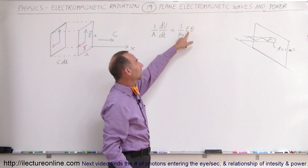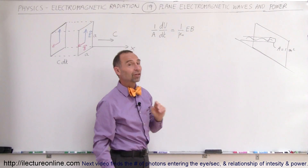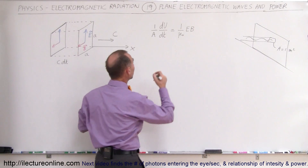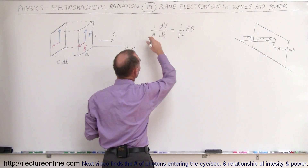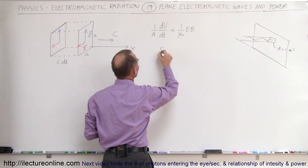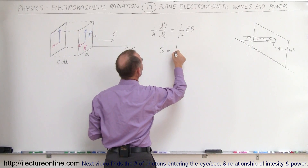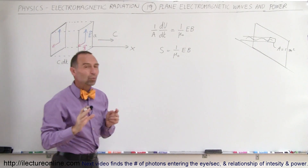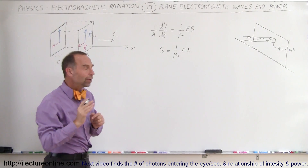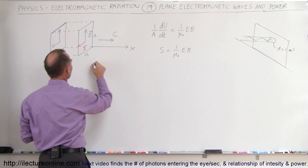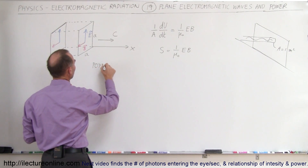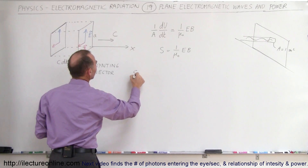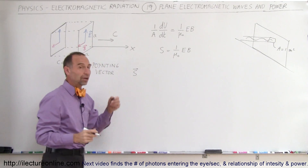Those are the RMS values of the electric field oscillations and the magnetic field oscillations. To make it easier, we came up with an equation where this whole thing is now called S. S is therefore equal to 1 over mu sub naught times E times B. This is written as a vector and it's called the Poynting vector.